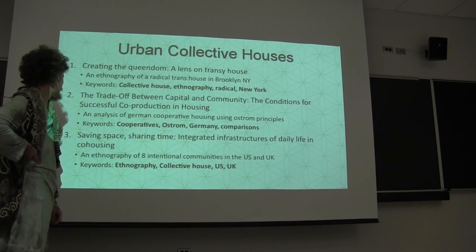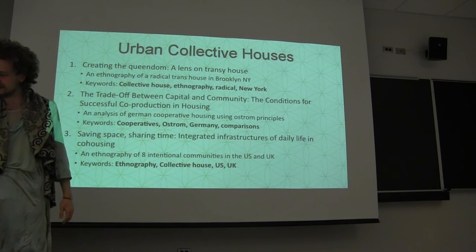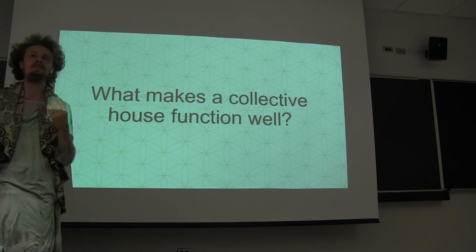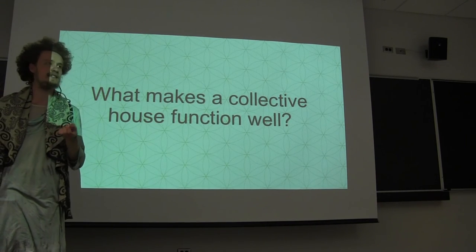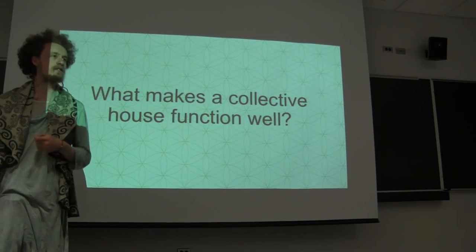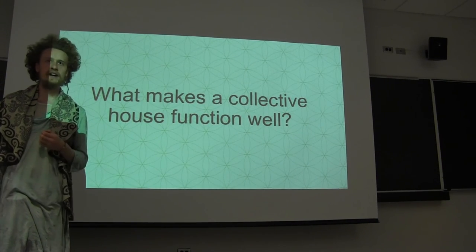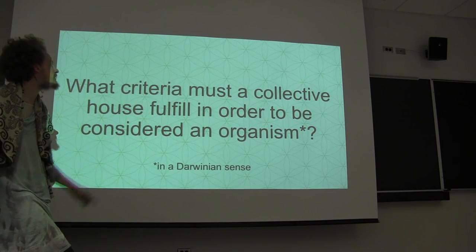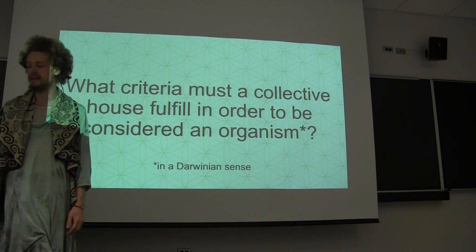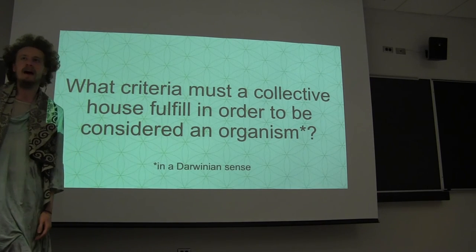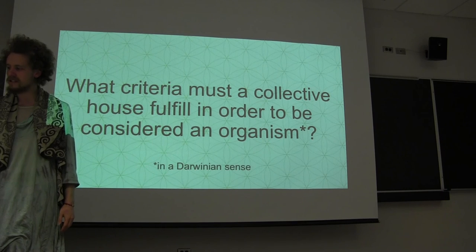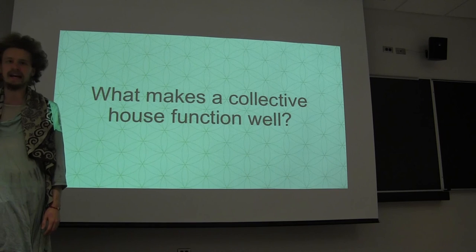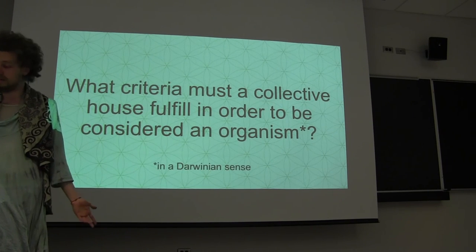Throughout all this literature, the question I really wanted to see answered is: what makes a collective house function well? And I couldn't really find a good answer to that. Of course, the question I really want to ask is: what criteria must a collective house fulfill in order to be a self-sustaining organism in a Darwinian sense? But we can go back to the simpler first question — what makes a collective house function well? The best answer we have for that question, I believe, is from this woman.